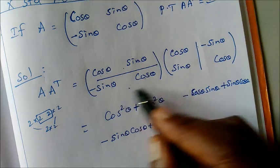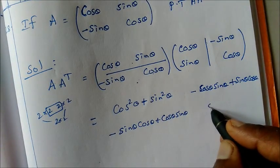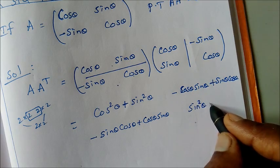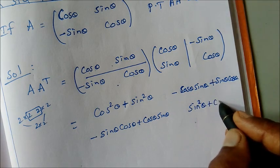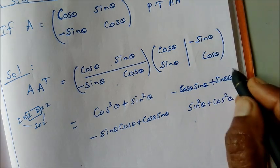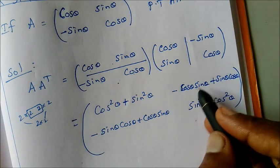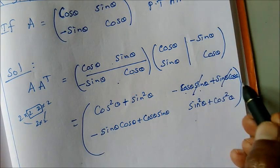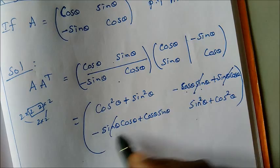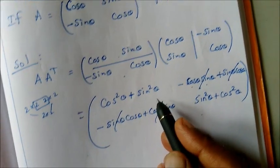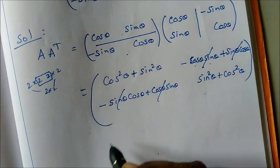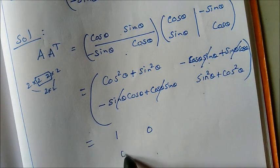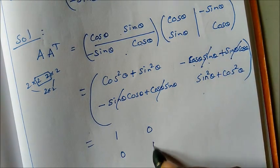Second row, second column: minus into minus gives plus, so sinθ into sinθ gives sin²θ, plus cosθ into cosθ gives cos²θ. Now the off-diagonal terms — cosθ sinθ and minus cosθ sinθ — cancel each other out. So sin²θ plus cos²θ equals 1, giving us 1, 0, 0, 1.